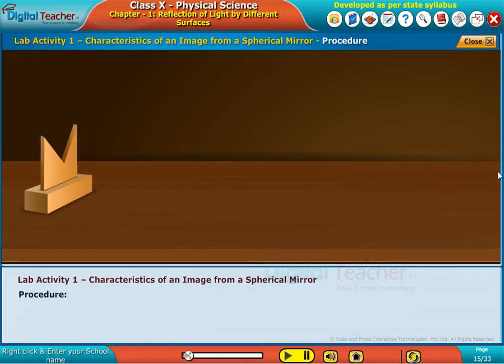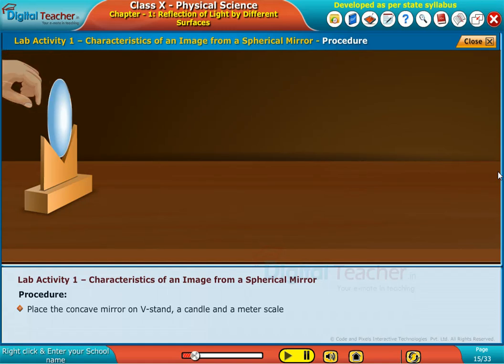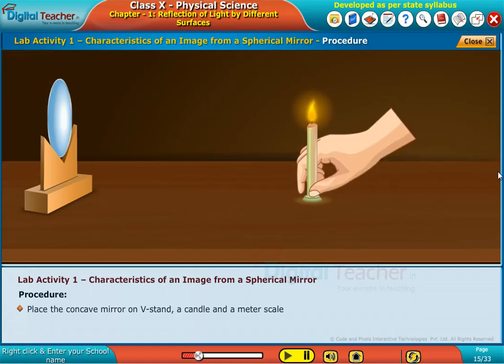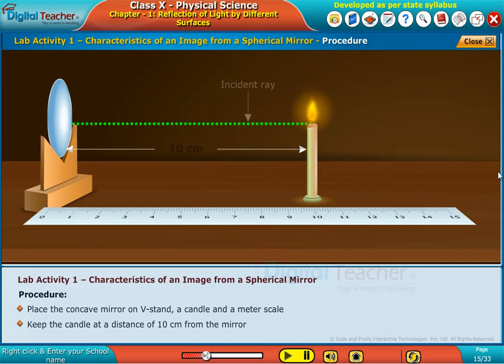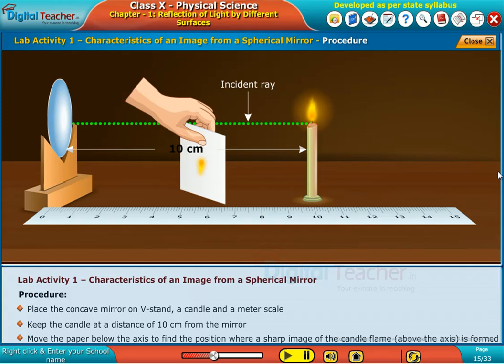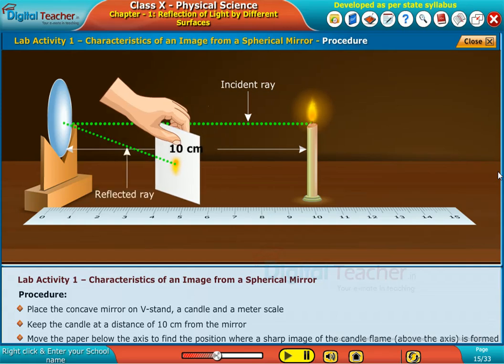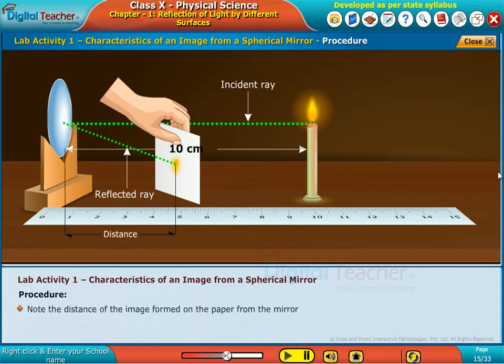The procedure involves the following steps. Place the concave mirror on V-stand, a candle, and a meter scale. Keep the candle at a distance of 10 centimeters from the mirror. Move the paper below the axis to find the position where a sharp image of the candle flame above the axis is formed. Note the distance of the image formed on the paper from the mirror.